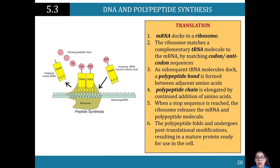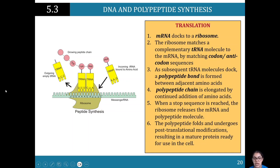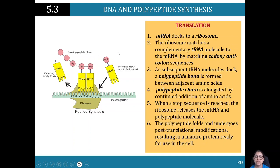Once the chain is elongated, we reach a stop sequence that tells the process to stop so the protein can be released. When that stop sequence is reached, the ribosome releases the mRNA and also releases the polypeptide molecule. This polypeptide molecule then folds into different shapes and undergoes post-translational modifications, resulting in a mature protein that is ready to use in the cell.